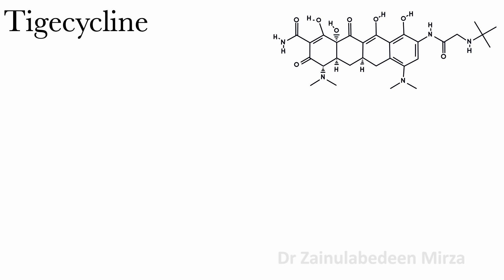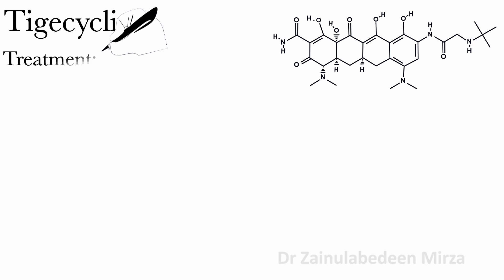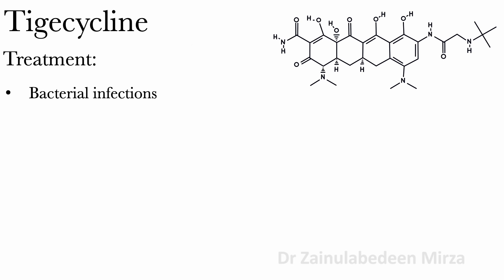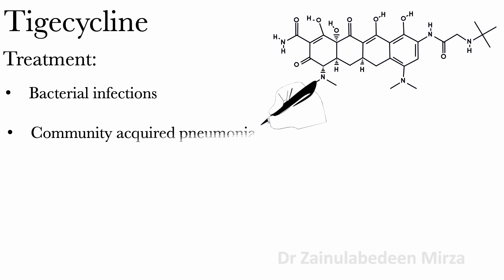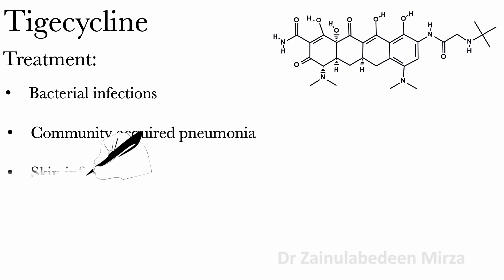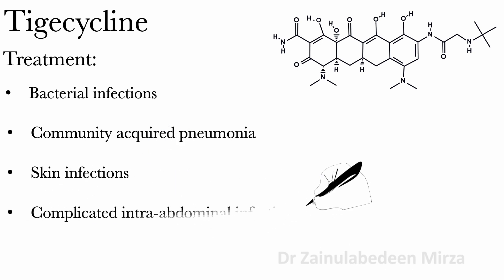Tigacycline is an antibiotic used to treat a wide variety of bacterial infections. It is used to treat community-acquired pneumonia, skin infections, and complicated intra-abdominal infections.